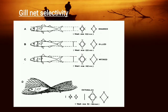For gill net selectivity, it mainly depends on wedging and gilling. First, how does a gill net select fishes? First is snagging — if fishes are caught in the gill net by snagging, fish are caught by the mouth, so the mouth is trapped in the mesh. Second is gilling, meaning the gill of the fish is trapped in the mesh. Similarly, wedging is when a fish is held tight around the body by a mesh.